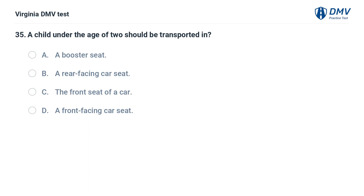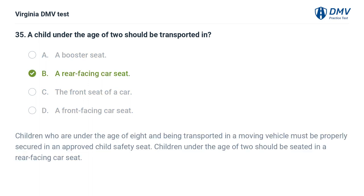A child under the age of two should be transported in: A. A booster seat, B. A rear-facing car seat, C. The front seat of a car, D. A front-facing car seat. The correct answer is B: A rear-facing car seat. Children who are under the age of eight and being transported in a moving vehicle must be properly secured in an approved child safety seat. Children under the age of two should be seated in a rear-facing car seat.